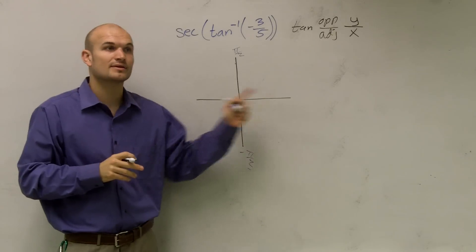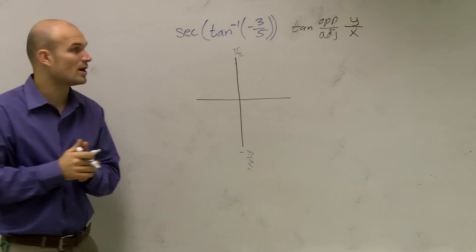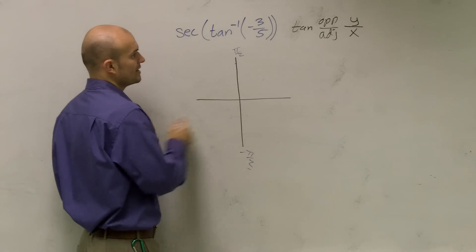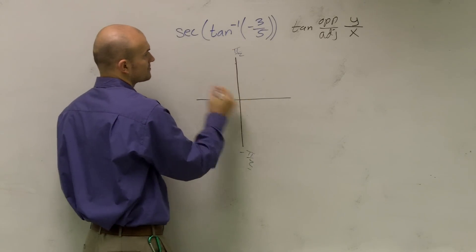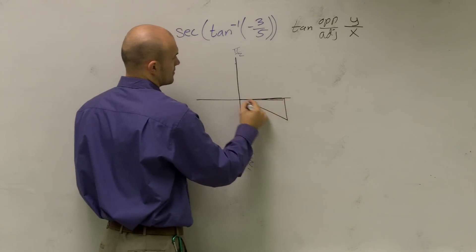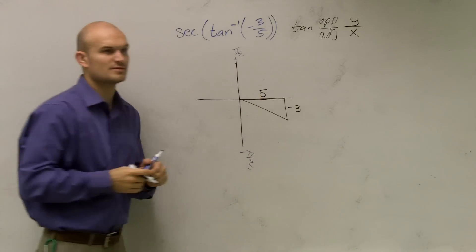Our tangent is the same thing as our y over x. So what I could say is my y could be a negative three and my x could be a five. So I get to have negative three and my x being a five.